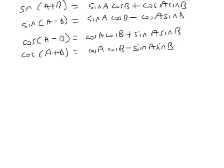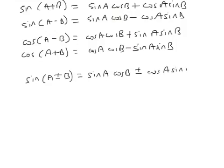So this is normally written in this form. Sine A plus or minus B is sine A cos B, because both of these are the same. Then plus or minus cos A sine B. So you can either read the top part, where you've got a plus here and a plus there, or you've got a minus part there.